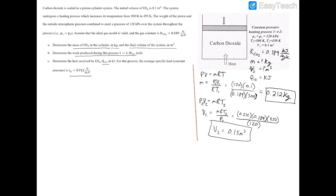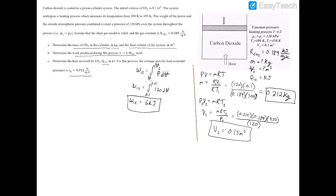For part B, we find the work from 1 to 2. The work W12 equals the integral from V1 to V2 of P dV. Since the pressure is constant at 120 kilopascals, integrating from 0.1 to 0.15 meters cubed gives W12 equal to 6 kilojoules.